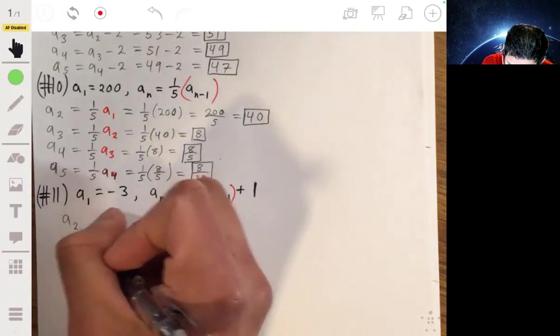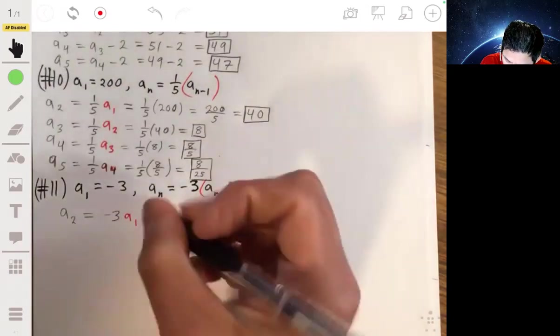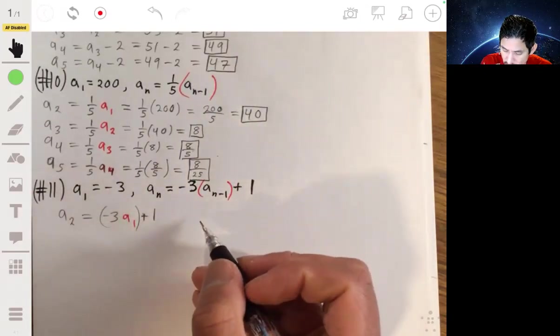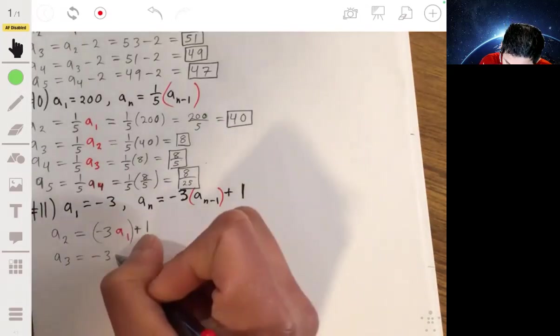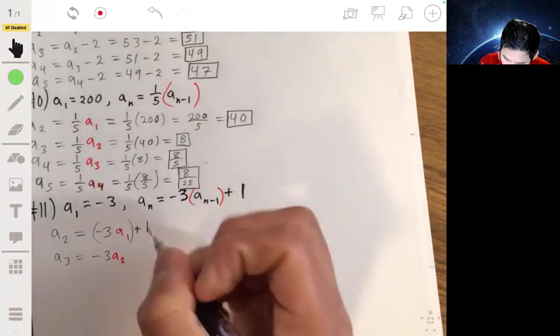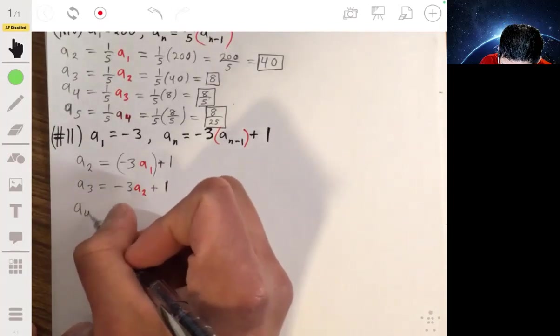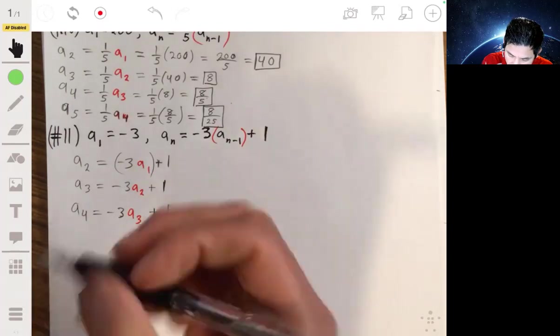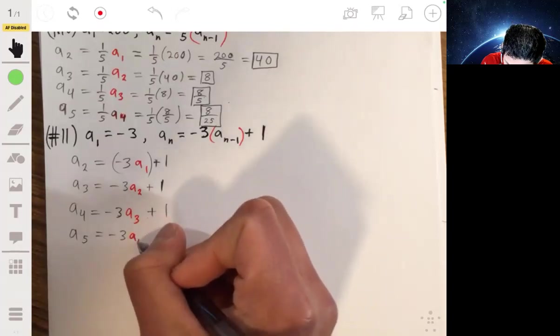So if you want to find a2, a2 would be negative 3 times a1 plus 1, after that whole thing. After you do this whole thing, you add 1. a3 would then be negative 3 times a2, then you add 1 to that. And a4 would be negative 3 times a3, then you add 1 to that. And a5 would be negative 3 times a4 plus 1.